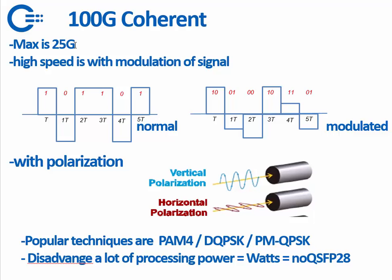They use a regular 25 gig optic, but instead of doing a normal signal, they do a modulated signal. With a normal modulation, per time unit you have on, off, on, on, off, on — one bit for every time signal. With modulation, you put more phases in: you have on one port a one, a zero, or half on and half off, giving four options — that's called a modulation technique. Another technique is polarization, where you split the light into vertical and horizontal beams, and every light beam is then another data source.